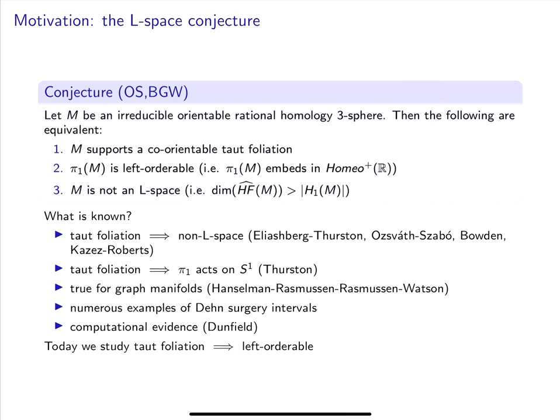The conjecture says that three conditions on an irreducible oriented rational homology 3-sphere are equivalent. First, the condition that M supports a taut foliation. Second, the condition that π₁(M) is left orderable. And third, that M is not a Heegaard-Floer L-space.